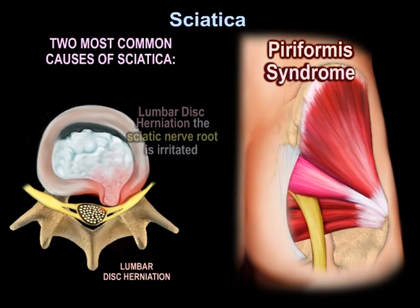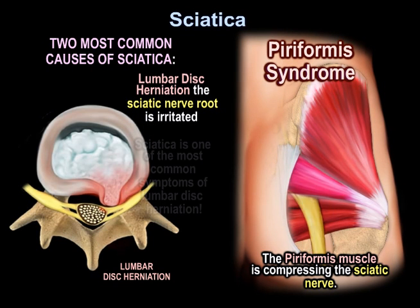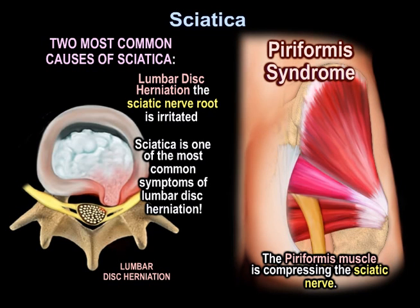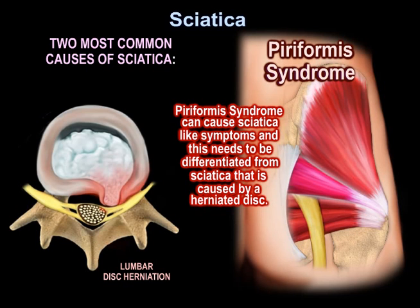In the case of disc herniation, a nerve root is irritated. In the case of piriformis syndrome, the sciatic nerve is compressed by the piriformis muscle. Sciatica is one of the most common symptoms of lumbar disc herniation. Piriformis syndrome can cause sciatica-like symptoms, and this needs to be differentiated from sciatica caused by a herniated disc.